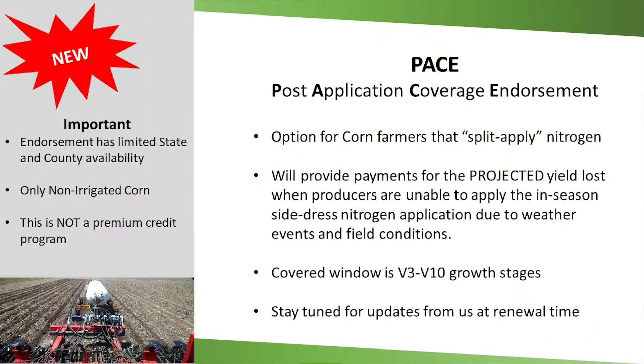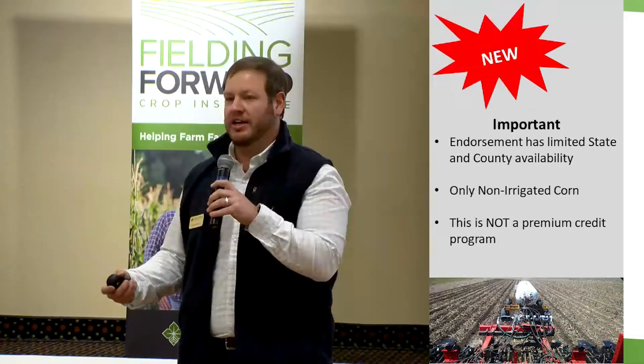This is due to weather events, not due to the availability of not having the nitrogen or not being able to get it. So last year may have been a good example where we had such an amount of rain in June — that's where it's going to be calculated on. The windows of coverage: the nitrogen needs to be applied at V3 to V10. It's going to be based on your individual APH and what factor you choose. You can elect 75% to 90% coverage on the PACE endorsement.